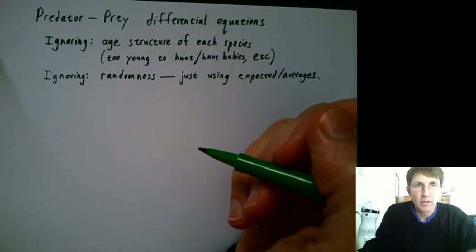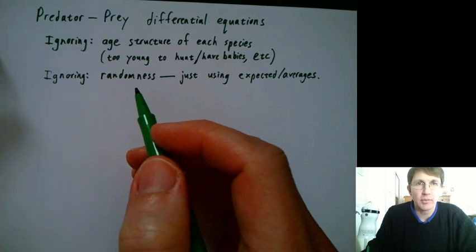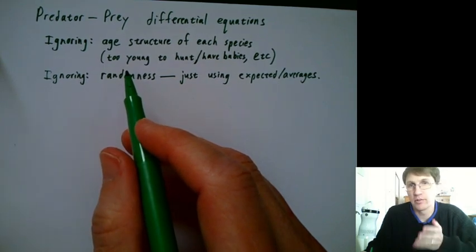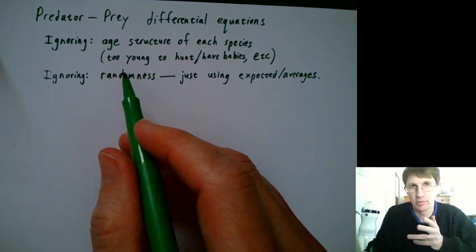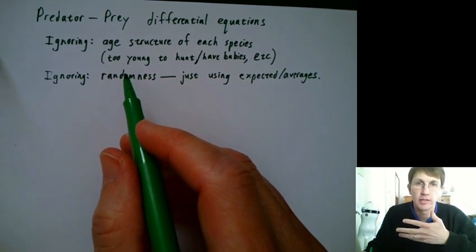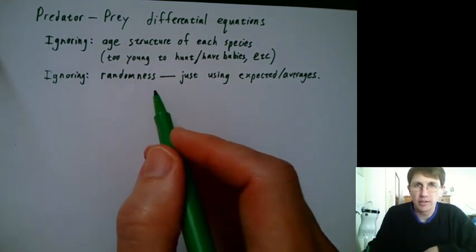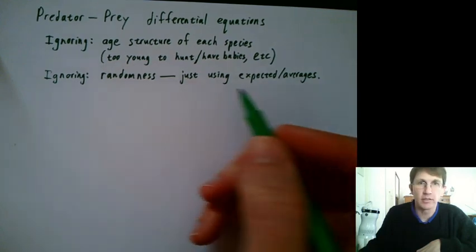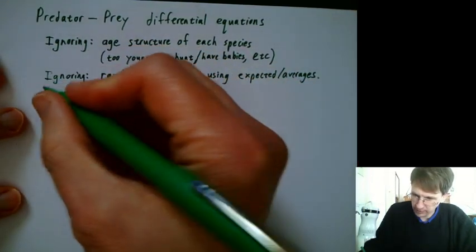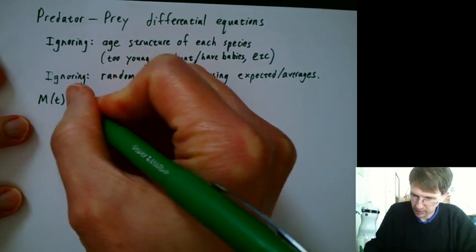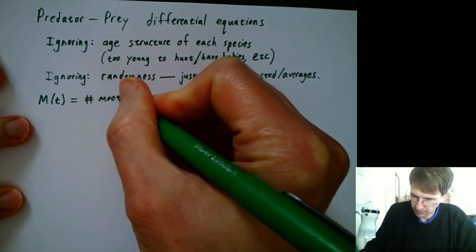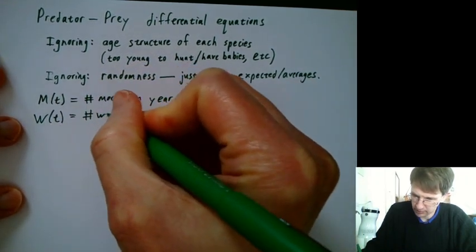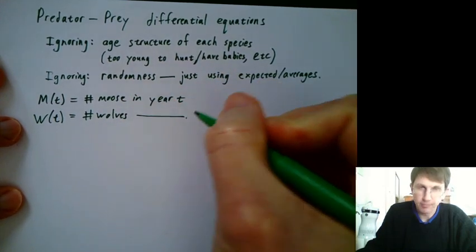Let's take a look at it on paper. We should say which things we're ignoring when we're setting up a system. It's easiest to ignore the fact that some animals are too young to hunt or too young to have babies, and just count how many moose are there, how many wolves are there. Also, let's ignore the randomness. It's really hard to mix randomness into calculus. Let's say that m(t) is the number of moose in year t, and w(t) is the number of wolves in year t.